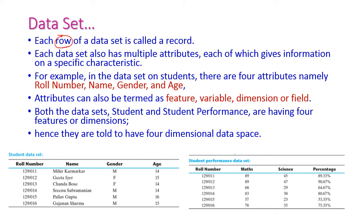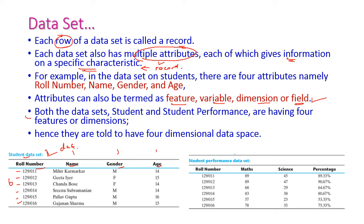In a dataset, each row is called a record. Here we have six records — that is, six students' details. The table has a collection of attributes, and these attributes are used to give information about the specific characteristics of a record. Here we have roll number, name, gender, and age as the attributes. Attributes are otherwise called as features, variables, dimensions, or fields. Both student datasets have four features or dimensions, so they have a four-dimensional data space.